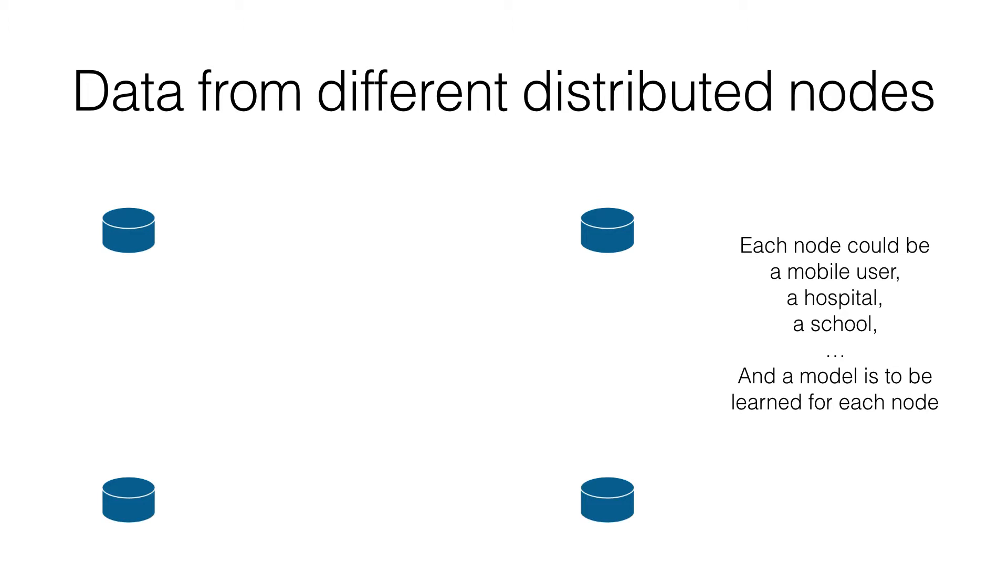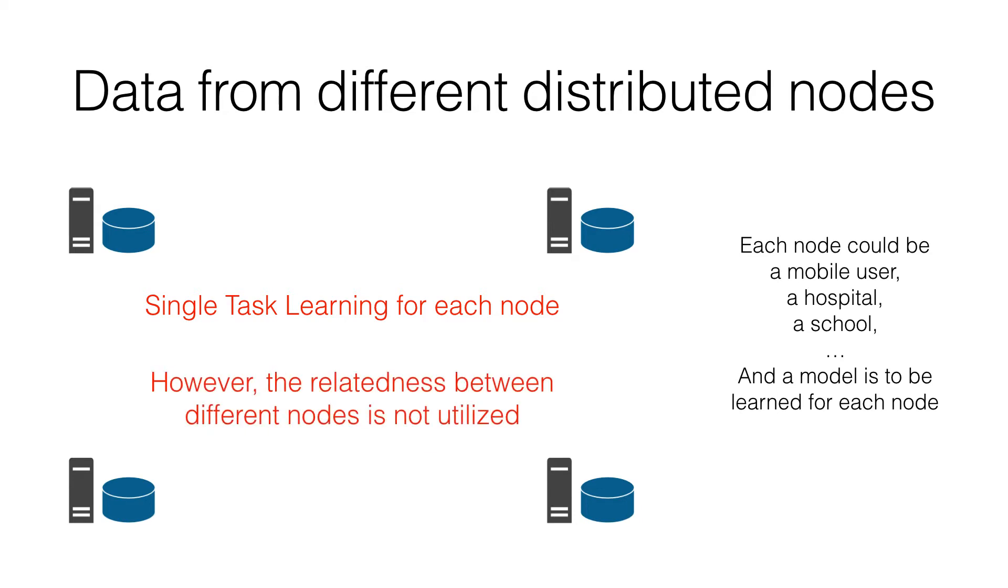What we would hope to do is to learn a specific machine learning prediction model for each node. A direct and simple approach would be performing single task learning on each node locally. However, this fails to exploit the relatedness of the same type of prediction problems in different nodes to help improve generalization.